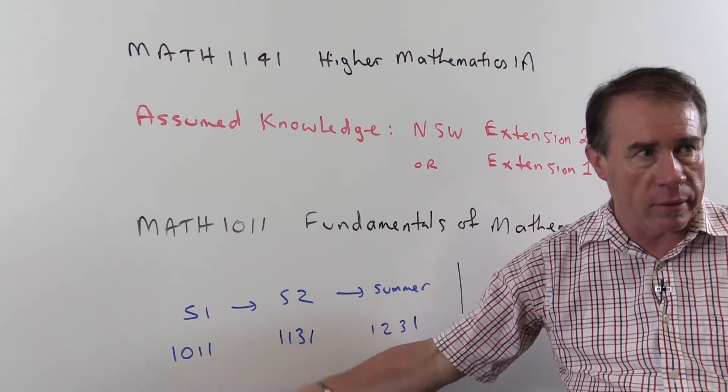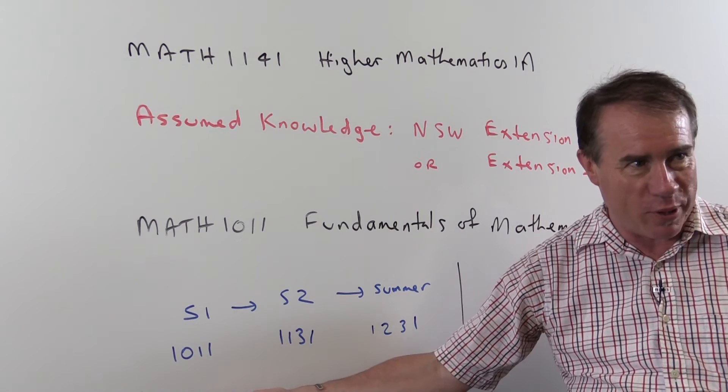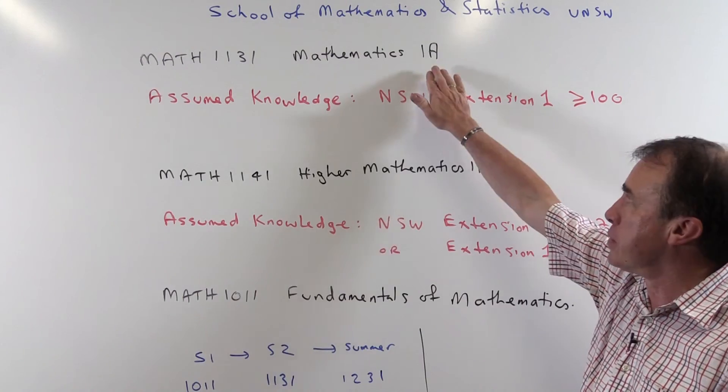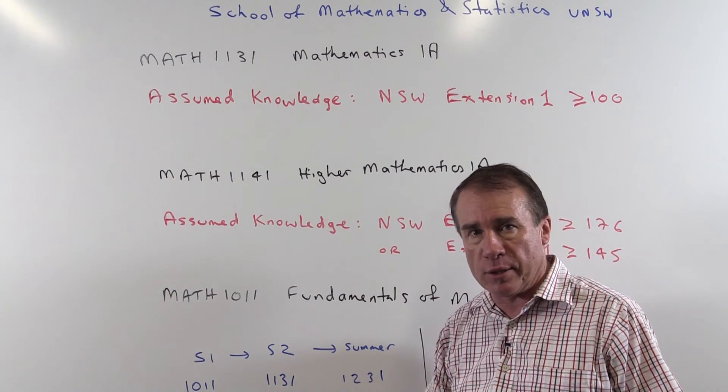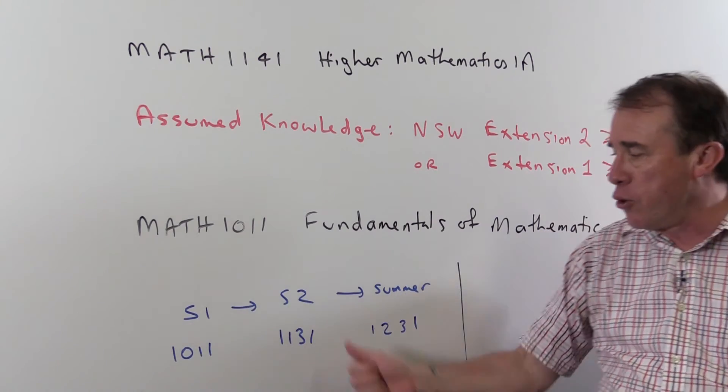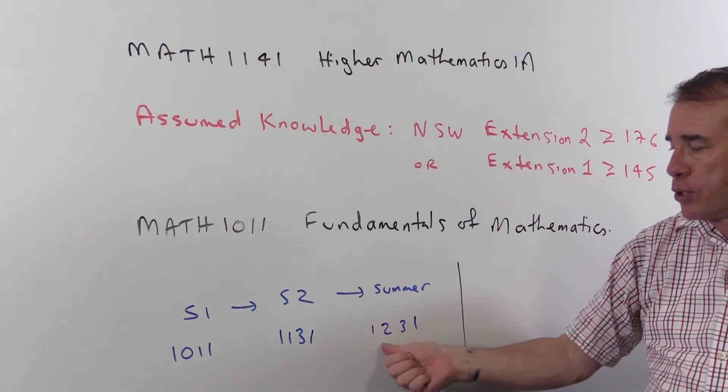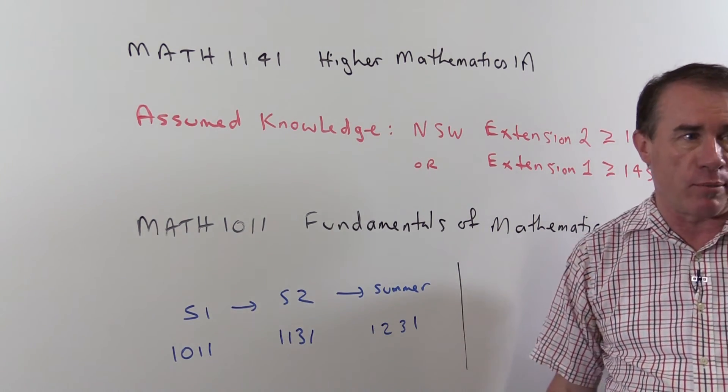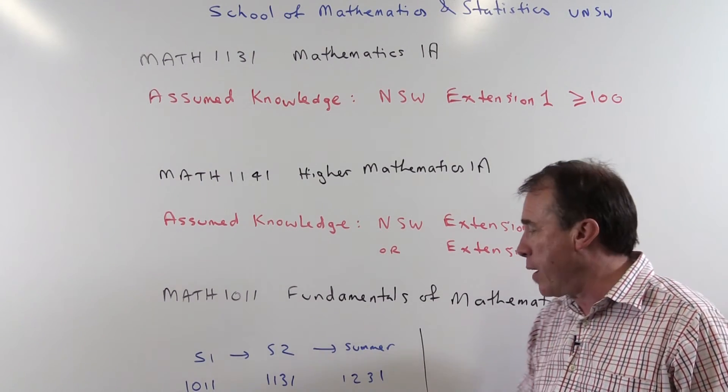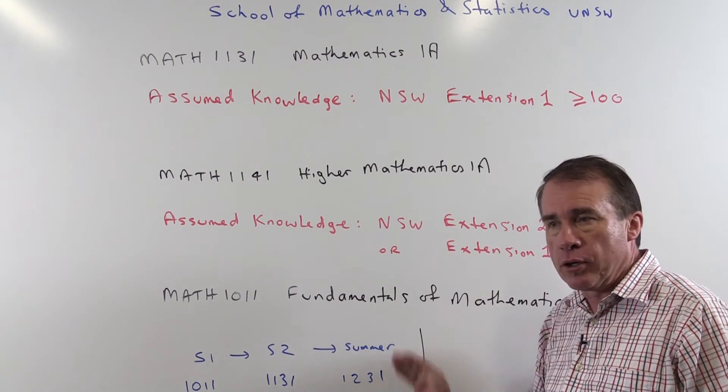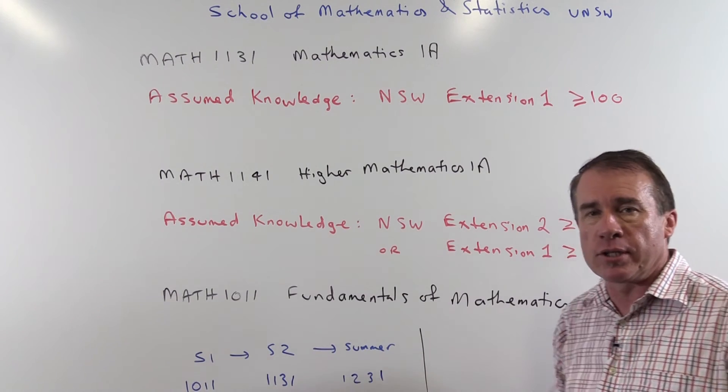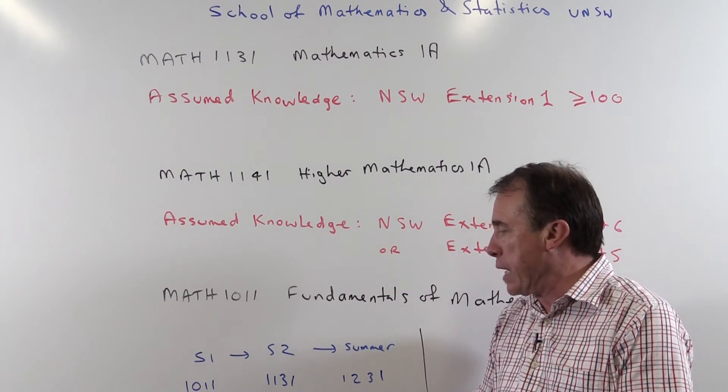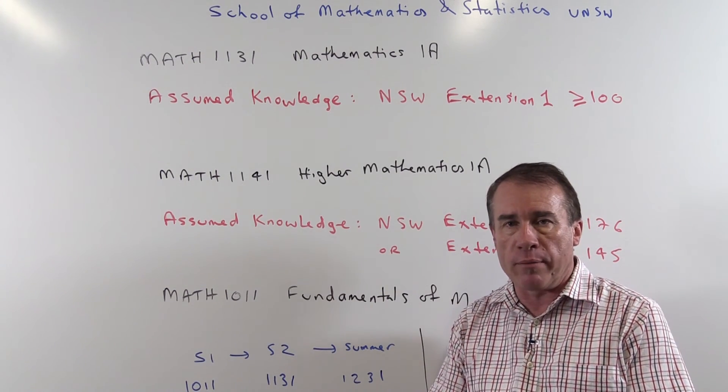Do well at that, learn some Maths, gain some confidence and then take Maths 1131, this is the standard course, to take that in the second semester and you can then finish off by taking Maths 1B, Maths 1231 over the summer semester. And that way at the end of the year you start your second year just the same as everybody else but you've had a slightly smoother run in to getting through all of your Mathematics.